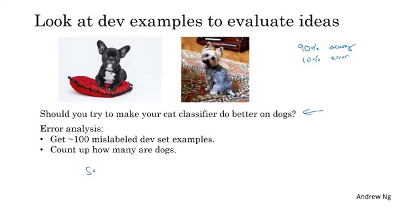Now, suppose that it turns out that 5% of your 100 mislabeled dev set examples are pictures of dogs. So that is, if 5 out of 100 of these mislabeled dev set examples are dogs, what this means is that of a typical set of 100 examples you're getting wrong, even if you completely solve the dog problem, you only get 5 out of 100 more correct. Or in other words, if only 5% of your errors are dog pictures, then the best you could reasonably hope to do if you spend a lot of time on the dog problem is that your error might go down from 10% error down to 9.5% error. So this is a 5% relative decrease in error from 10% down to 9.5%.